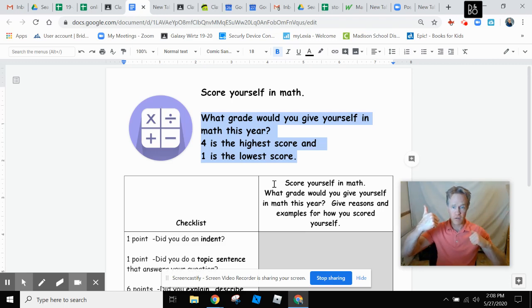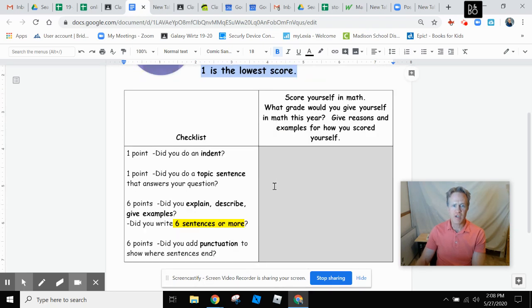Would you score it a 1, the lowest, 2, 3, or a 4? Maybe something in between. Maybe you would give yourself two different scores. Whatever your opinion is, is fine. Just make sure you explain it with reasons and examples.